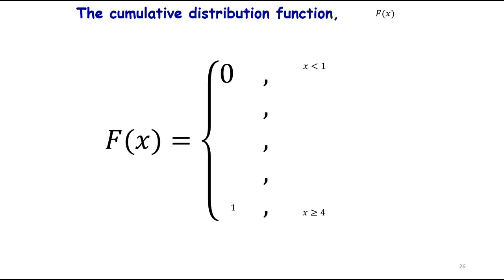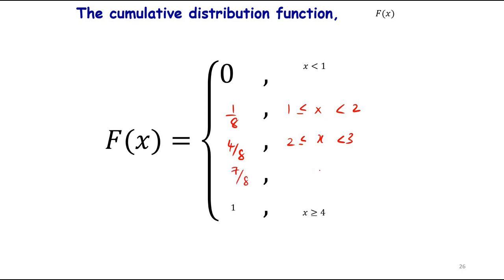The cumulative distribution function as a piecewise function: F(x) = 0 for x < 1; F(x) = 1/8 for 1 ≤ x < 2; F(x) = 4/8 for 2 ≤ x < 3; F(x) = 7/8 for 3 ≤ x < 4; and F(x) = 1 for x ≥ 4.